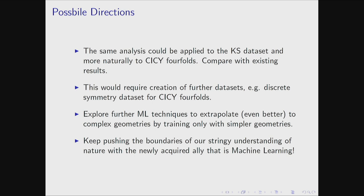Possible future directions include adapting these algorithms to similar problems in the Kreuzer-Skarke list, and this extends very naturally to CICY fourfolds — which would require creating further datasets. One could also envision constructing line bundle sums on favorable CICYs with our much larger list. The key takeaway is that we should explore further machine learning techniques to extrapolate even better by training only with simple geometries and finding out about more complex geometries, and keep pushing the boundaries of our stringy understanding of nature with machine learning as a new ally.